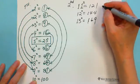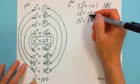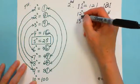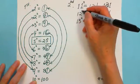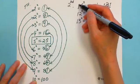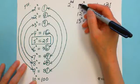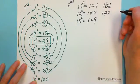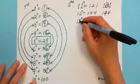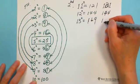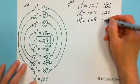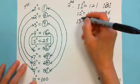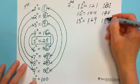For 12 squared, first digit is 1, last digit squared is 4, multiply the two digits: 2 times 1 times 2 is 4 — put it in the middle, giving 144. For 13 squared: 1 squared is 1, 3 squared is 9. Multiply: 2 times 1 times 3 is 6. So you get 169.